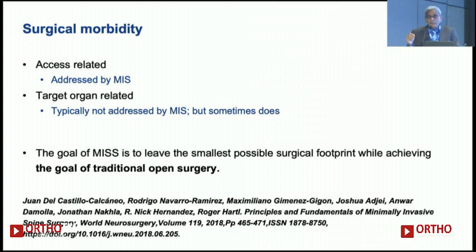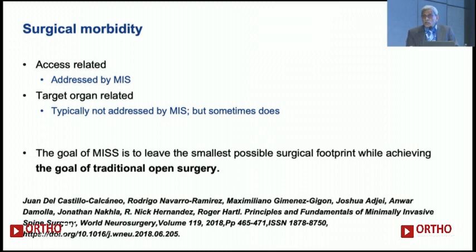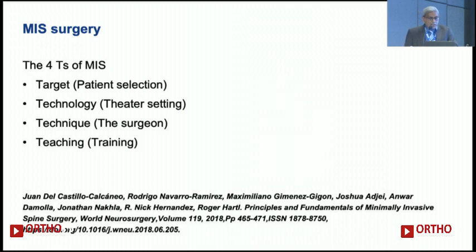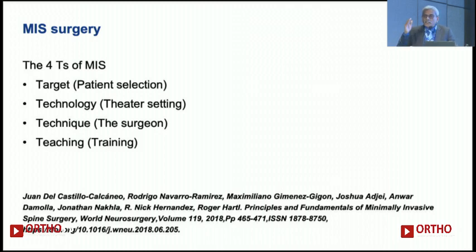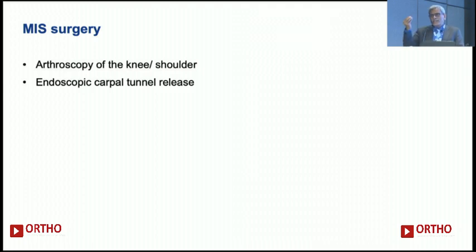There's an important paper by Roger Hartl and his team. He says the goal of MIS is to leave the smallest possible surgical footprint while achieving the goal of traditional open surgery. The target organ procedure must remain constant. Roger Hartl's paper identifies four principles of MIS surgery, the most important being patient selection — every patient is not a good candidate for MIS surgery. In some situations, in low-dysplastic, low-grade listers, you can perhaps perform it across the spectrum. You need a fairly advanced theater setting — O-arms, navigation, image intensification — and a surgeon with meticulous technique and adequate training.